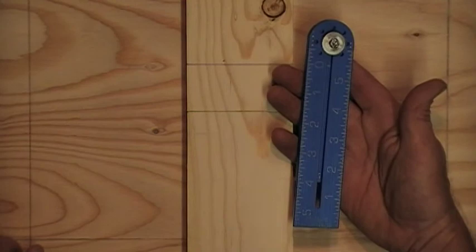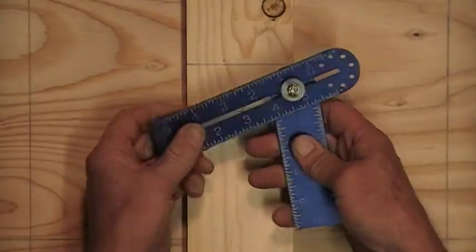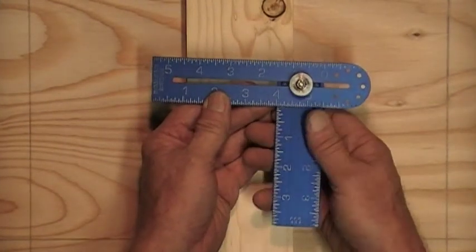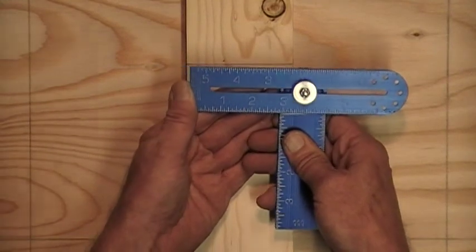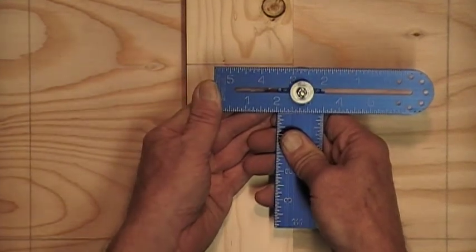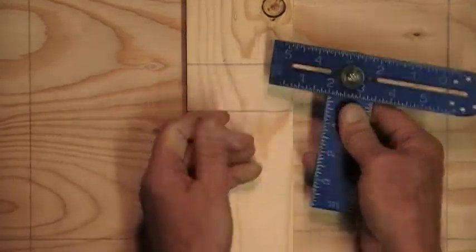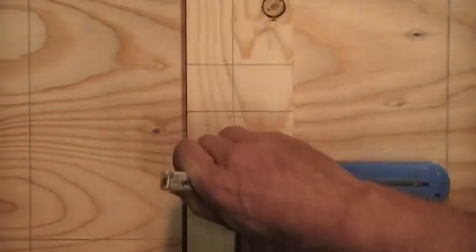The next setting it has is as a combination square which is a great square. If I want to rip a board at say two inches, I set the blade at two inches on the lower scale. And then I scribe my line.